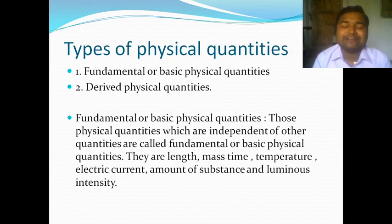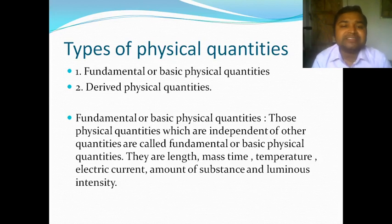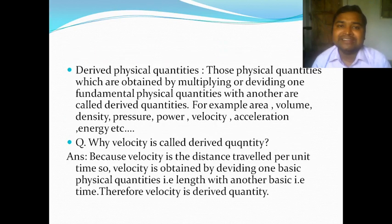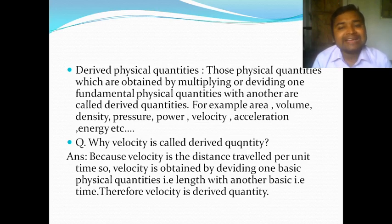Physical quantities are divided into two types: fundamental quantities and derived quantities. Fundamental quantities, also known as basic physical quantities, do not depend upon other quantities. There are seven fundamental quantities: length, mass, time, electric current, amount of substance, and luminous intensity. Derived physical quantities are those obtained by multiplying or dividing fundamental quantities — examples include area, volume, density, pressure, power, and velocity.